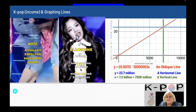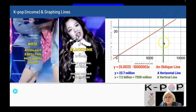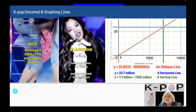You have a total stream of 7.2 billion and money earned of 23.7 million. So at this point, total streaming is 7.2 billion and money earned is 23.7 million. When they didn't have any streaming, they got zero money — so that's another point on this graph.